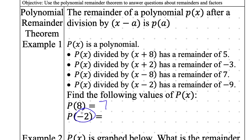p of negative 2 — who can tell me what p of negative 2 is? If it's negative 2, I'm looking for positive 2. You have to switch the value. If it's negative 2, I'm looking for positive 2, which means the remainder is negative 3. It is negative 3.